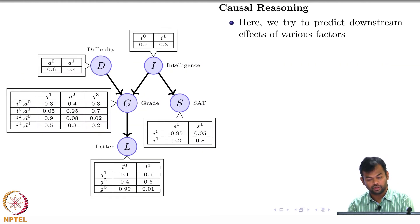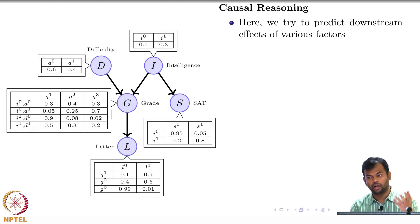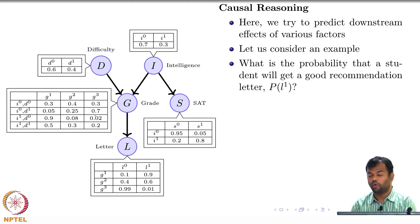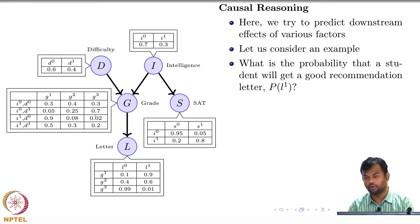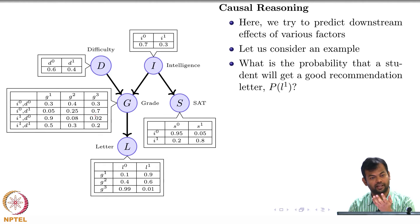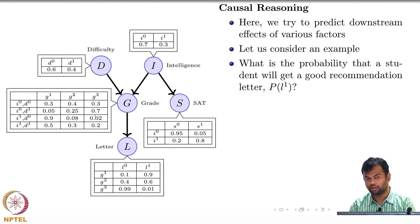The first type of reasoning is causal reasoning, where we look at downstream effects of various factors. I would want to know: what is the probability that a student will get a good recommendation letter? How do you compute this probability? Is it directly given anywhere? No. You will marginalize over all the variables which are not of interest to you.